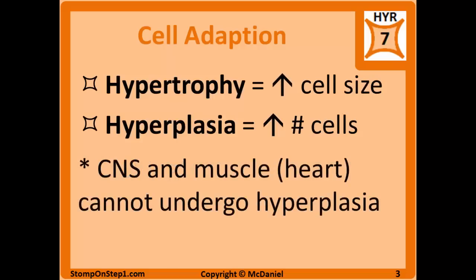It should be noted that the central nervous system and muscle, which includes the heart, cannot undergo hyperplasia. So when these tissues are placed under increased cell stress, they can only undergo hypertrophy. This is because these tissues are permanent tissues that are stuck in the G0 phase — they cannot undergo mitosis.